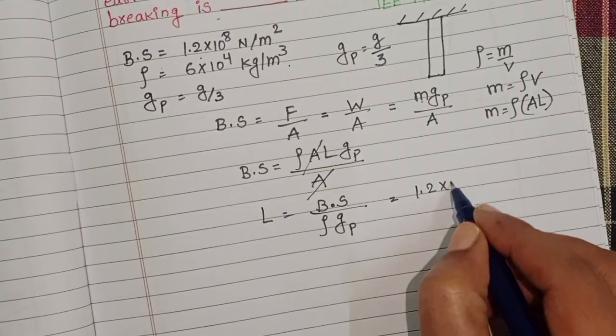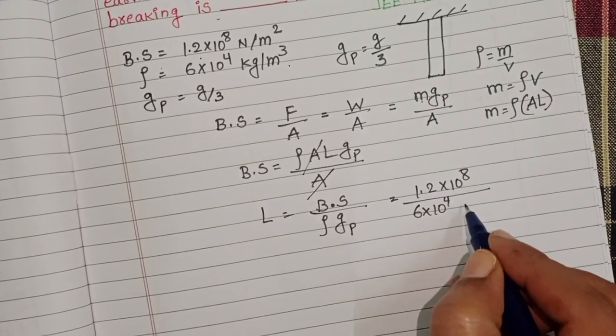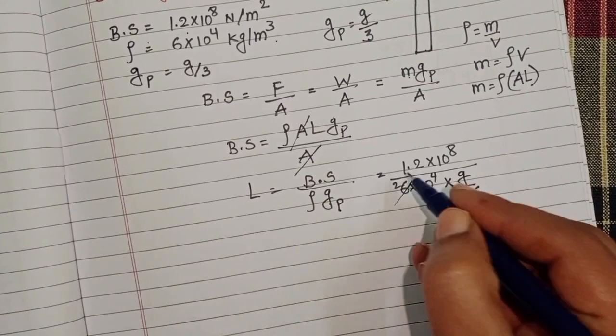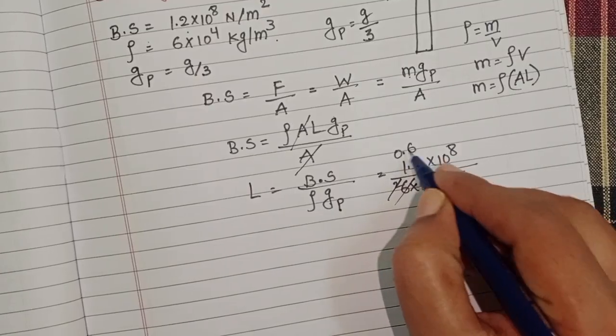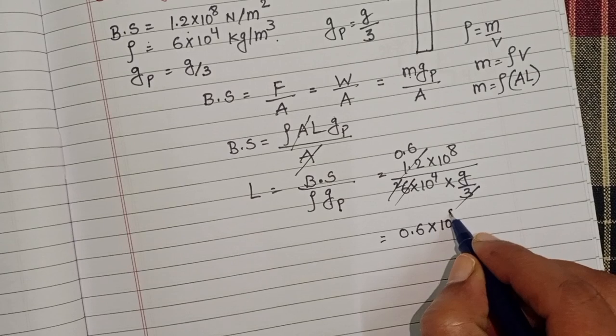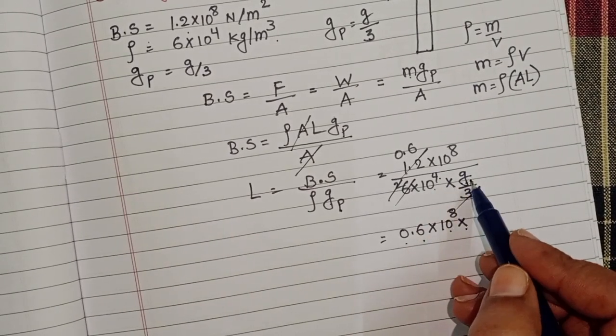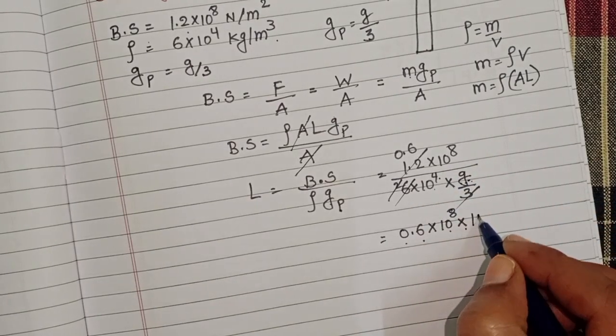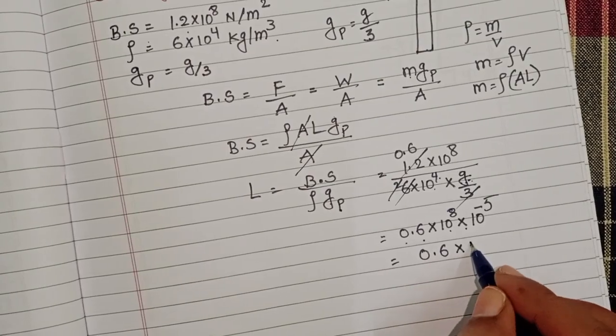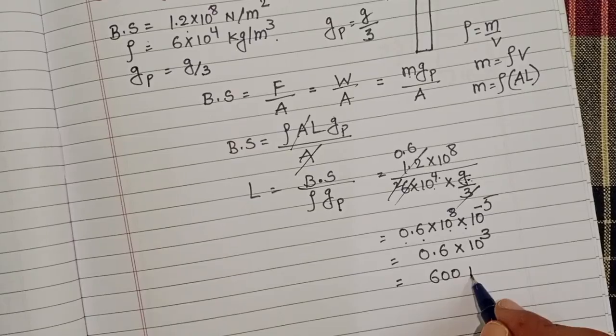1.2 into 10 power 8 by 6 into 10 power 4 into g by 3. 3 ones, 3 twos, 2 ones to 0.6. 0.6 into 10 power 8. Here g value 10, 10 power 4 into 10, 10 power 5. 10 power 5 goes to numerator, 10 power minus 5. 0.6 into 10 power 3, then it becomes 600 meters.